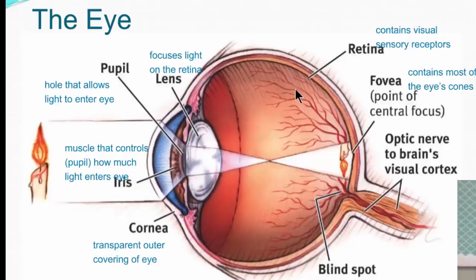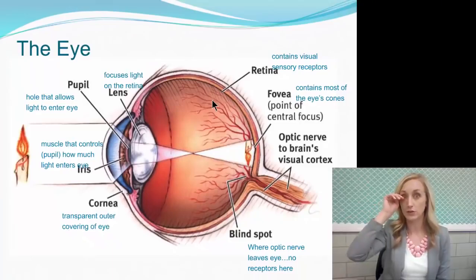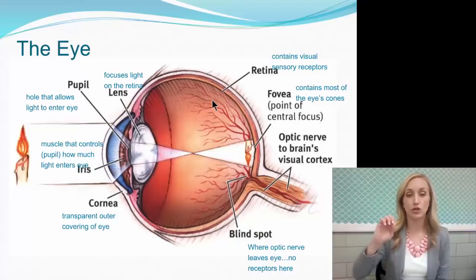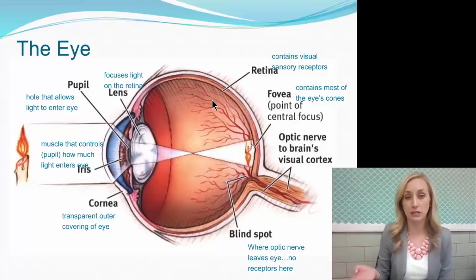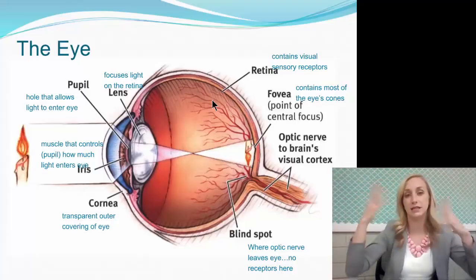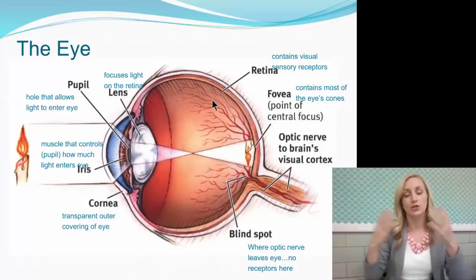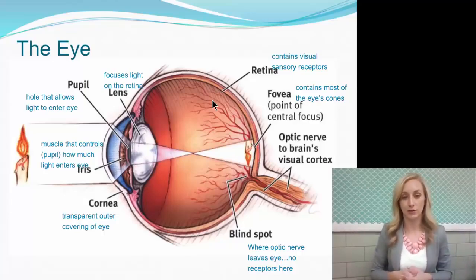The retina is at the very back of our eye and contains visual and sensory receptors. The retina is where transduction occurs. Each one of our sensory organs transduces — you should write this down. Transduction is when the sensory organ translates the stimulus, for instance light waves in an eye, and translates that external environmental stimulus into a neural message so that our brain can understand. It takes the light or sound wave and transduces it into a neural message.